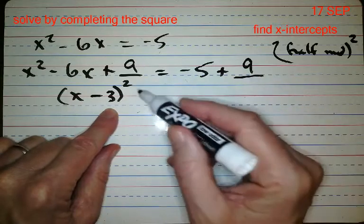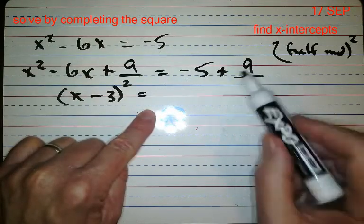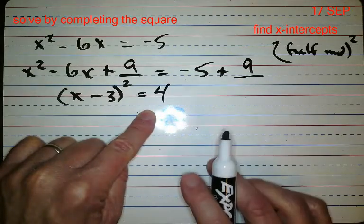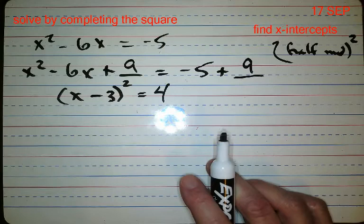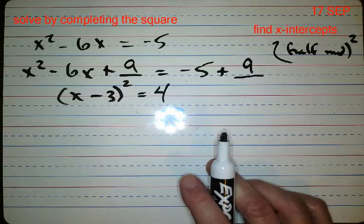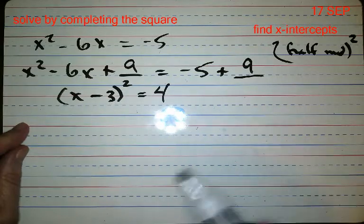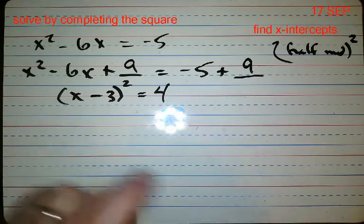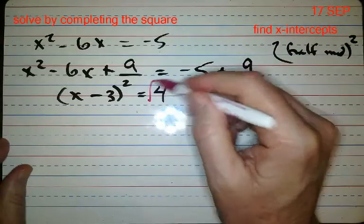And then look over here, we've got negative five plus nine, that's four. Now then we want to be able to solve this. Now the cool thing about this is that I can solve this and there's two answers. Whenever I solve a problem that has squares in it, I have to take the square root of both sides.